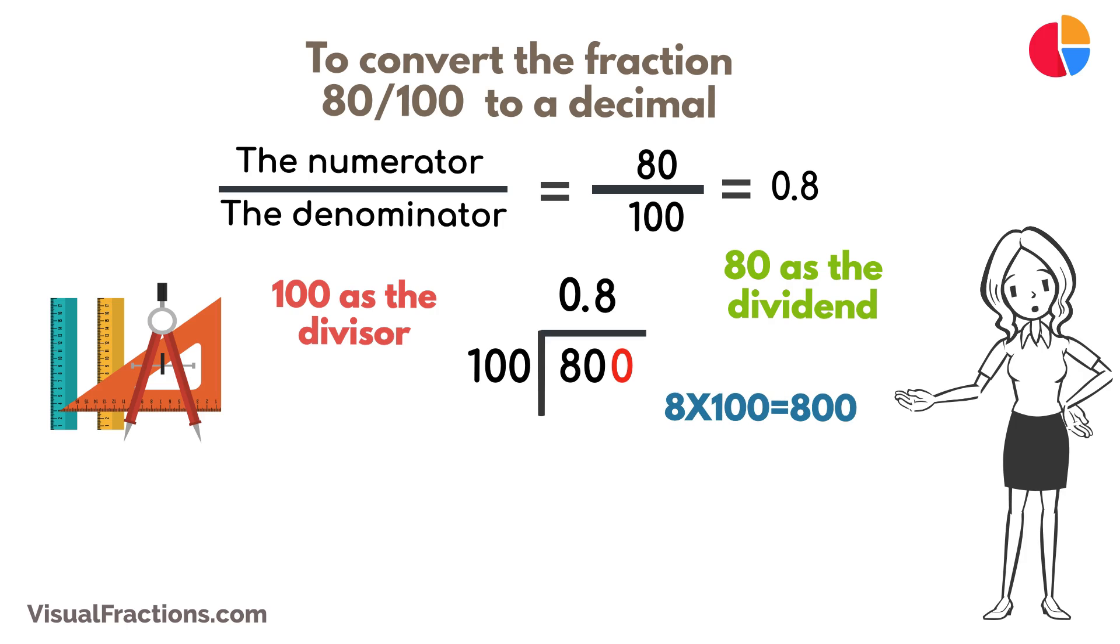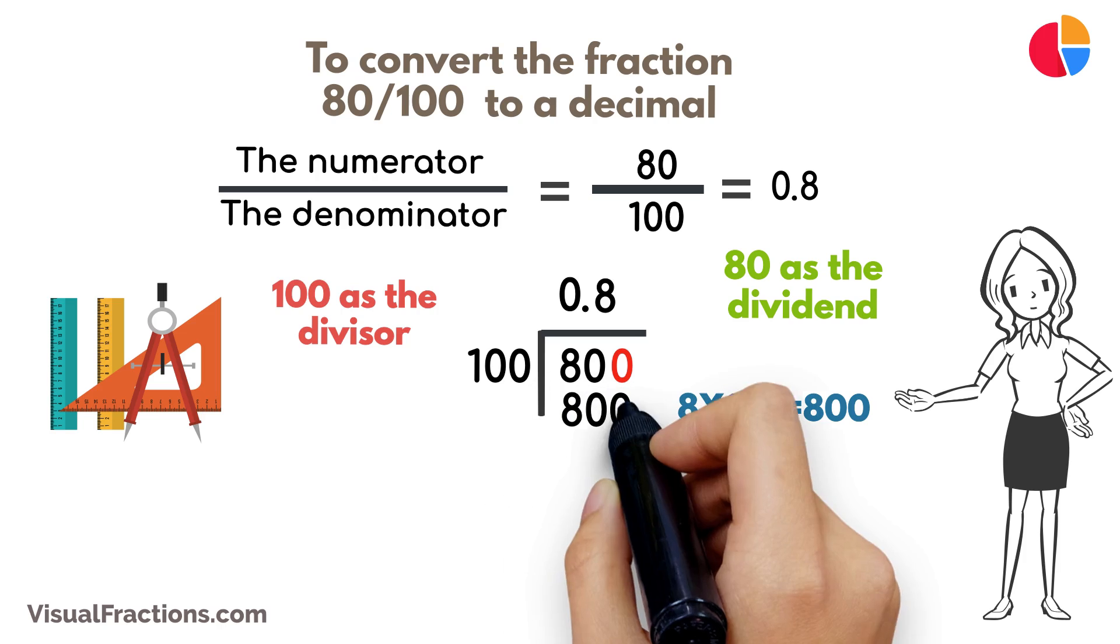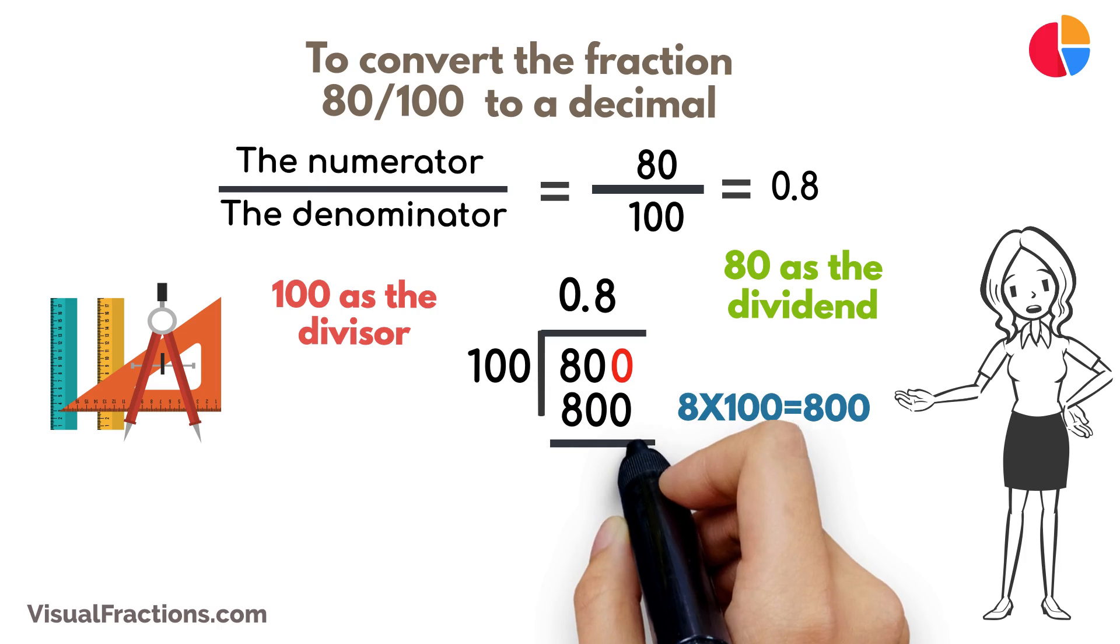Multiplying 8 by 100 gives us 800. When we subtract 800 from 800, we get a remainder of 0.